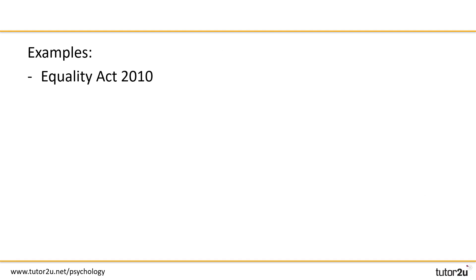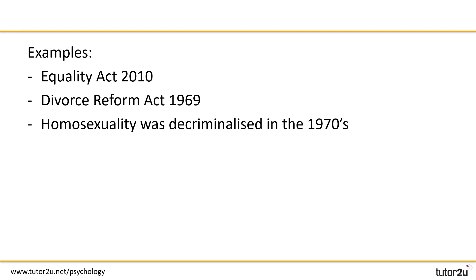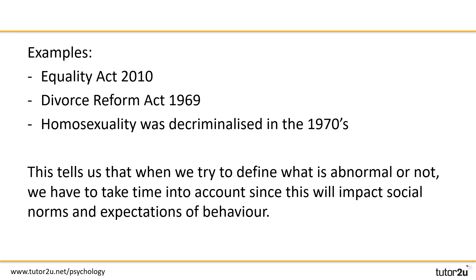Here are a few examples. In 2010, the Equality Act was passed, criminalizing discrimination against nine protected characteristics including sexual orientation and religion. In 1969, the Divorce Reform Act meant it became acceptable for women to seek a divorce, marking a step toward gender equality. Finally, in the early 1970s, homosexuality was decriminalized, having previously been illegal and considered a psychiatric condition. This tells us that when defining abnormality, we must also take time into account, since it impacts social norms and expectations of behavior.